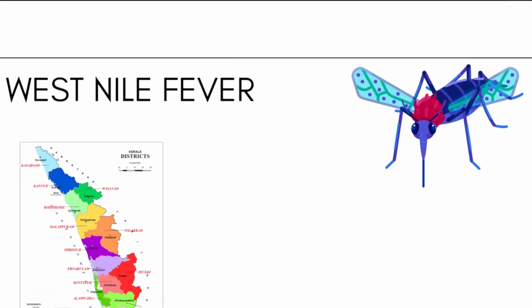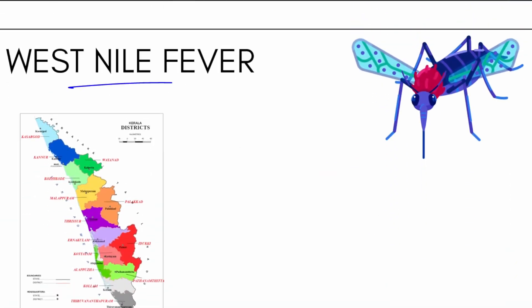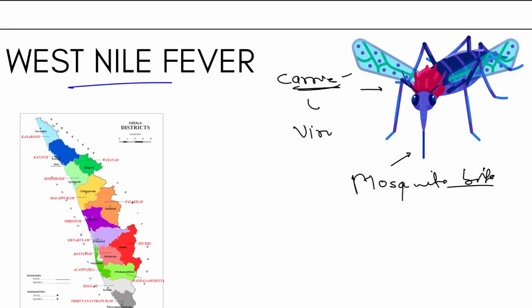Now let's come to the West Nile fever. It has been detected in Kerala. It is a condition caused by a mosquito bite — the mosquito is the vector, the carrier of the virus. It is a viral disease — not bacterial. The virus is a single-stranded RNA virus, categorized as a flavivirus. It is related to the virus family which also causes Japanese encephalitis and yellow fever.